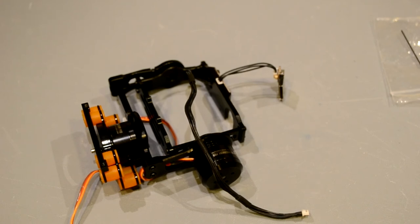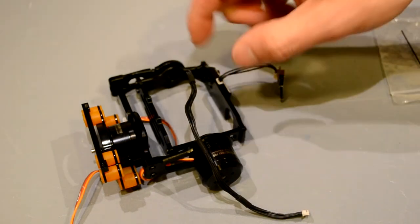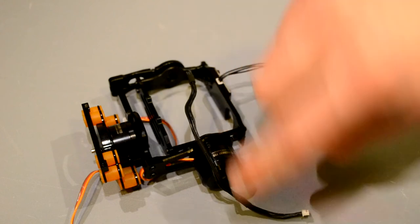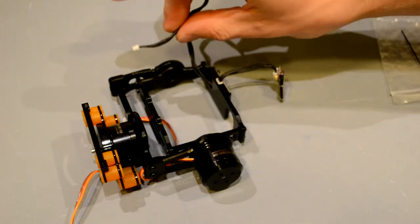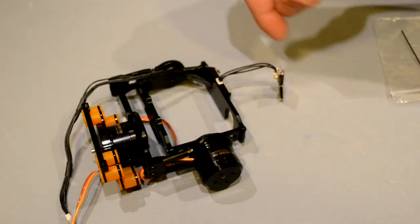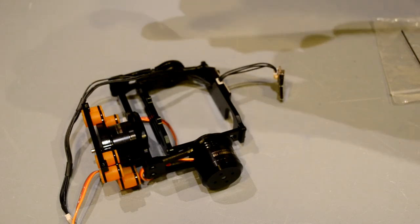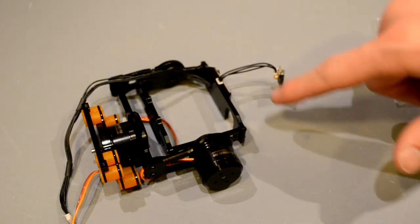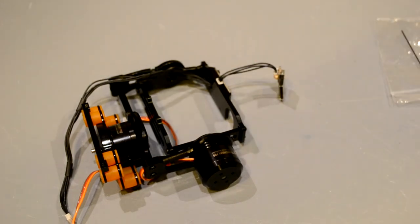Alright, so the gimbal frame is totally assembled. Now, the only thing that we need to do is we need to do a little bit of cable management here, wrapping these cables out of the frame so that they don't get tangled. And I'm going to go get a zip tie, and I'm going to show you how to do that real quick.